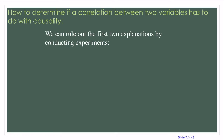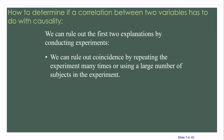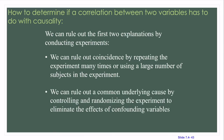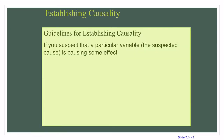We can rule out the first two explanations by conducting experiments. We can rule out coincidence by repeating the experiment many times or using a large number of subjects. We can rule out a common underlying cause by controlling and randomizing the experiment to eliminate the effects of confounding or interfering variables. We can establish causality with these guidelines.